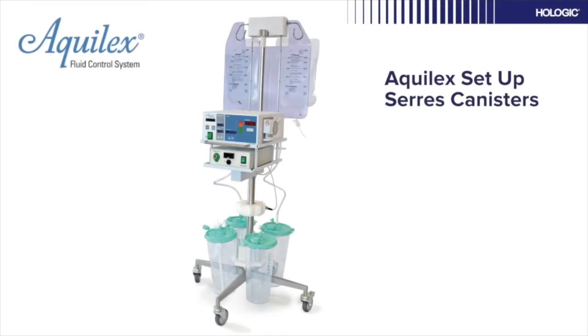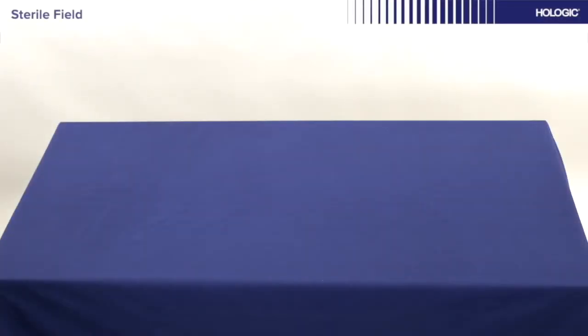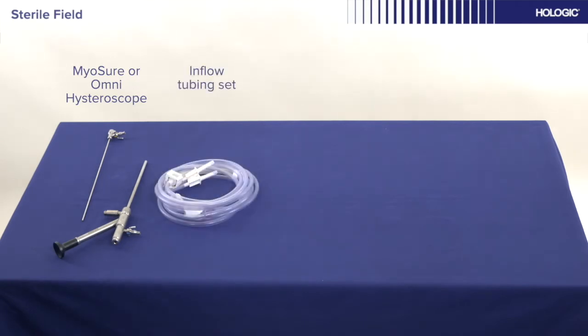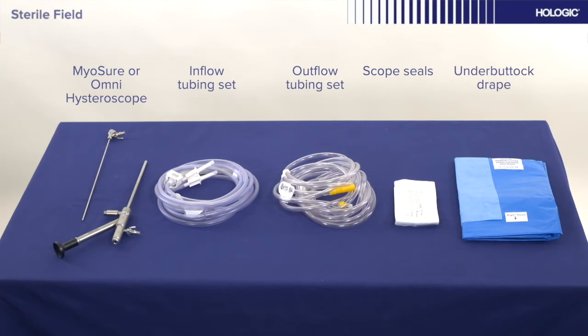These are the items required for carrying out a procedure using the Aqualex Fluid Management System. The following consumable items will be received into the sterile field: one Myershaw or Omni Hysteroscope, one Inflow Tubing Set, one Outflow Tubing Set, one Packet of Scope Seals, and one Underbuttock Drape.